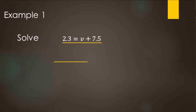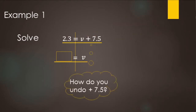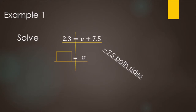When we go through to solve these, we want at the bottom of our page the variable by itself, an equal sign, and then its value. We need to ask: what's being done to v on the right-hand side? It's being added by 7.5. Subtraction undoes addition, so we subtract 7.5 from both sides. On the left, 2.3 minus 7.5 — think dollars: you have $2.30 and owe $7.50. You don't have enough, so it's negative. 7.50 minus 2.30: 7 minus 2 is 5, and 50 cents minus 30 cents is 20 cents. So v equals negative 5.20.